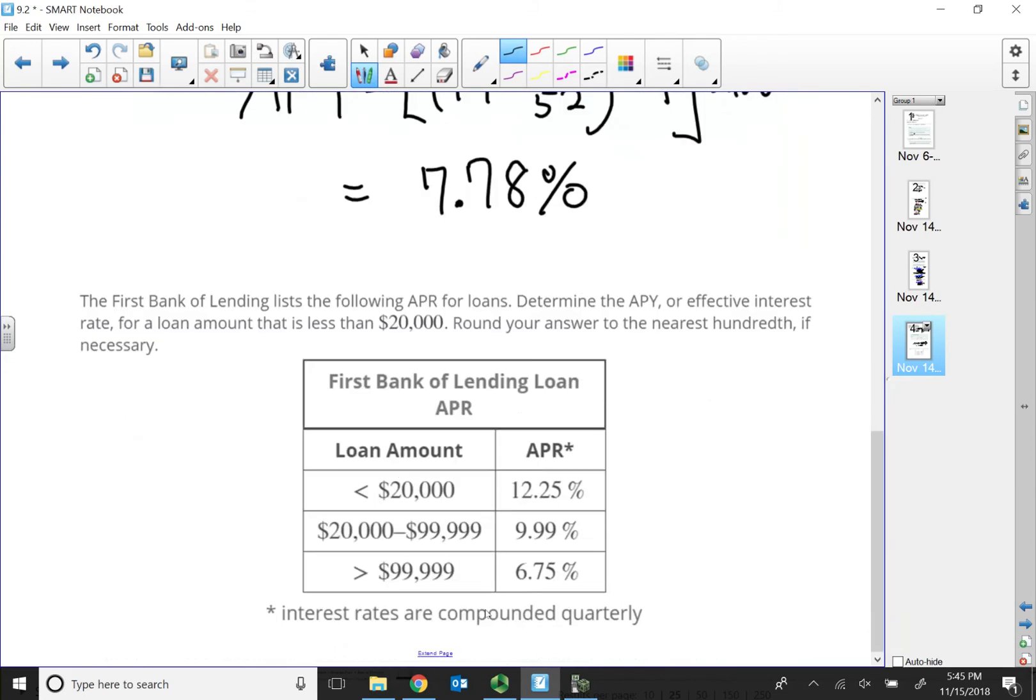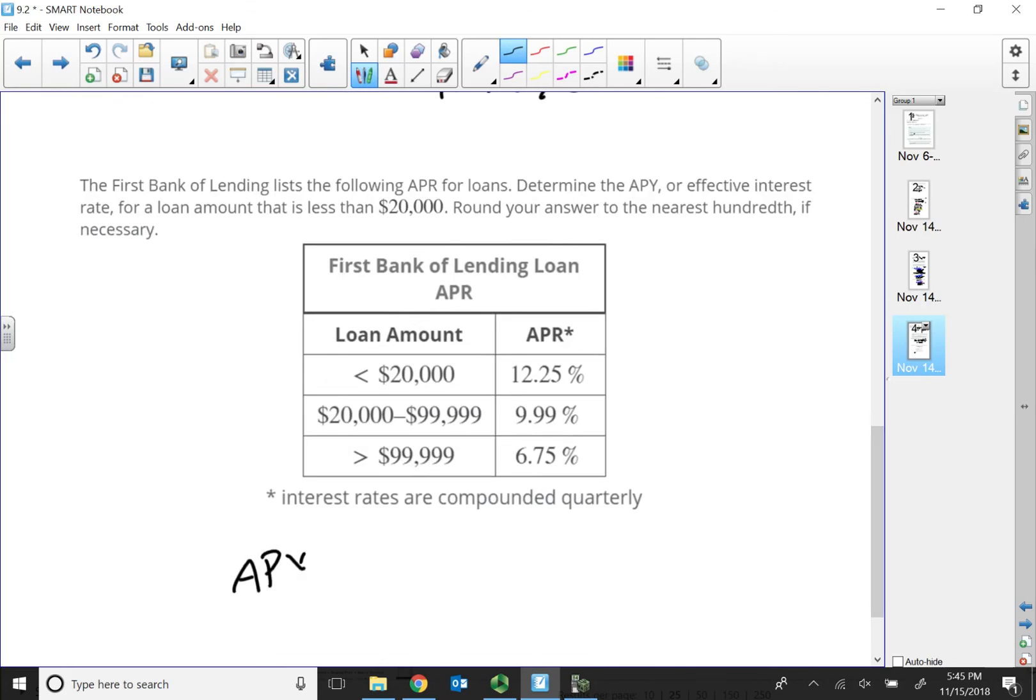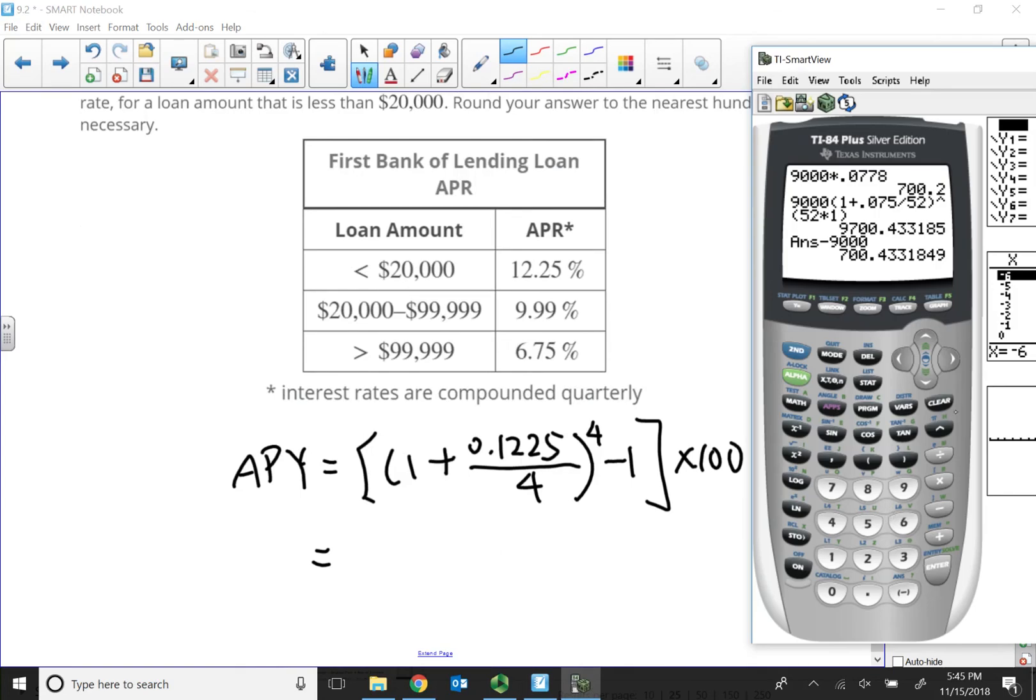So, if I just use the same formula again, compounded quarterly, I don't need money now. I don't need P in this formula. So, my APY, annual percentage yield, is going to be 1 plus my R, which is 0.1225, divided by my N, which is compounded quarterly, which is 4, raising to the 4th power, minus 1, and then times 100. That means converting to a percent at the very end. So, 0.1225, divided by 4 first, and then plus 1. Whole thing raised into the 4th power, then minus 1. So, times 100, my percentage yield is 12.82%.